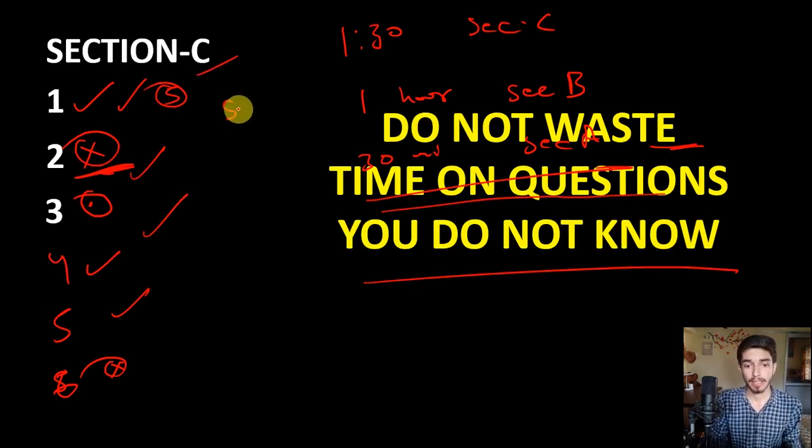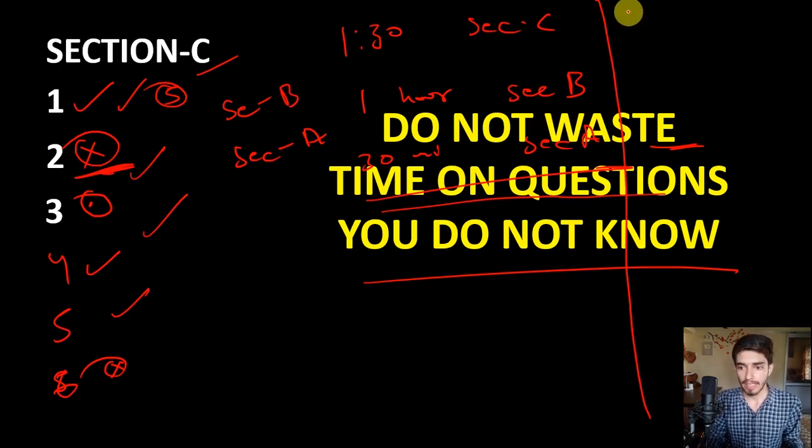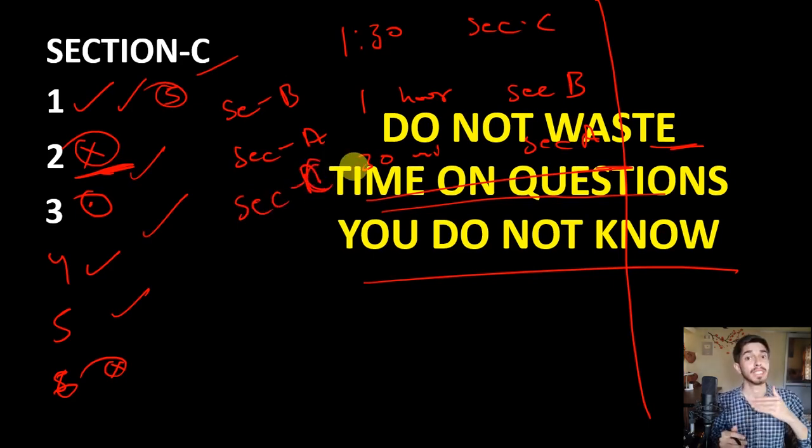You did Section B and Section A similarly. There is a column in your solution notebook where it is marked which questions you have completely done, which are not done and you won't even look at them, and which you have some confidence in. If at the end of the examination you still have time, then always go for those doubtful questions in Section C first, then in Section B and then in Section A. In Section C, if somehow you're able to solve that doubtful question, you will get directly five marks.